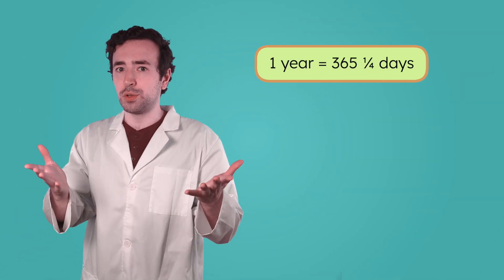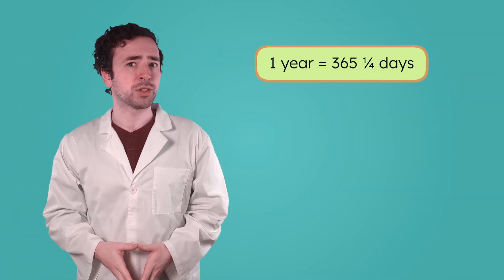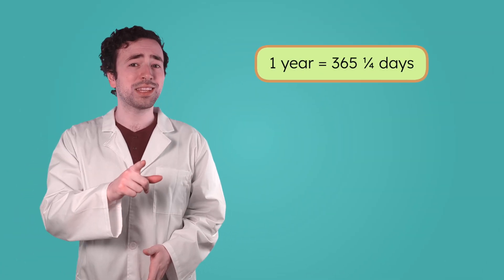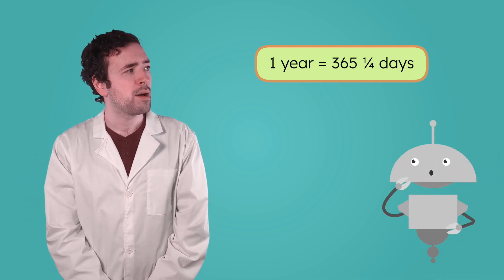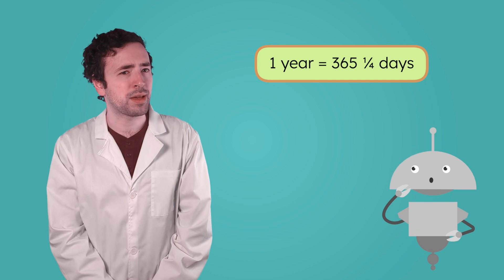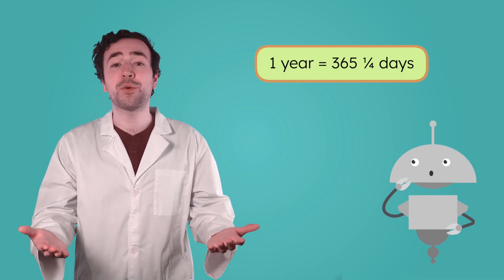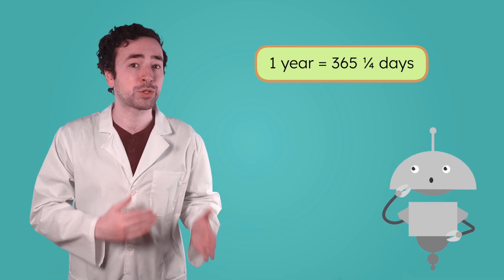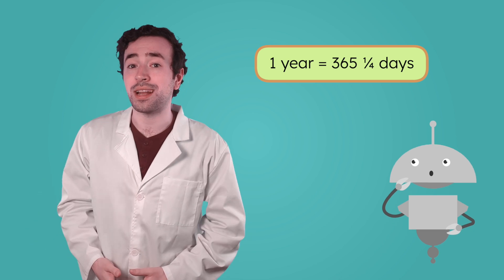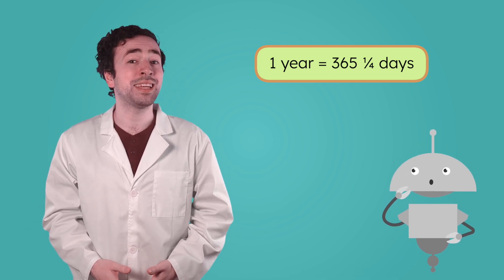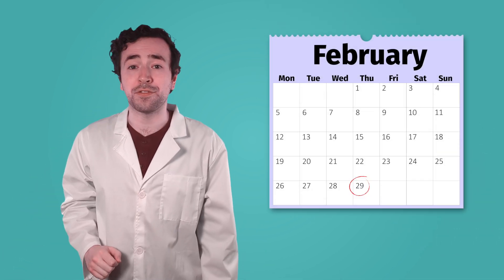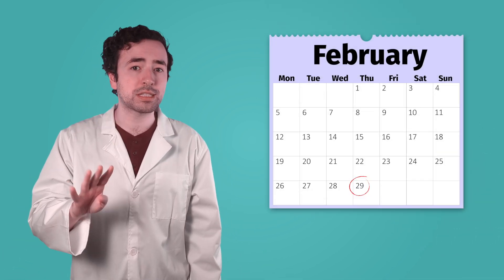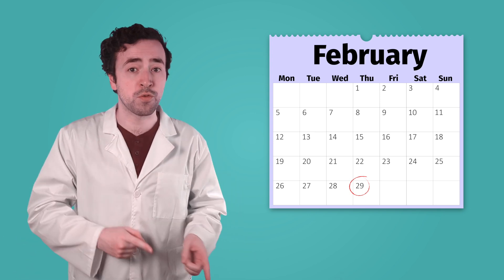But wait — Earth's revolution doesn't take exactly 365 days. It actually takes 365 and one quarter days. That quarter of a day must add up. Every four years, it equals one extra day. So how do we keep track of that extra day to make sure we're measuring the number of days in a year accurately? Leap years. We add an extra day to the end of February every four years to make sure our time measurements match up with the Earth's movements.